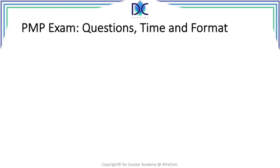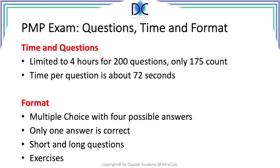First, about the PMP exam questions, time, and format: the PMP is limited to four hours for 200 questions — only 175 count, as there are 25 test questions — and the time per question is about 72 seconds. There are typically multiple choice questions with four possible answers, only one answer is correct, and there are short and long questions and exercises.